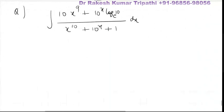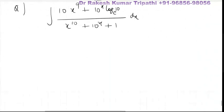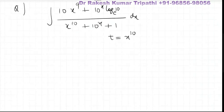You can see this integral numerator looks like derivative of denominator. So we shall have t equal to the denominator: t equals x to the power 10 plus 10 to the power x plus 1.